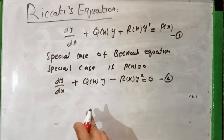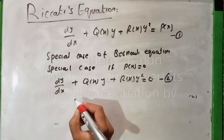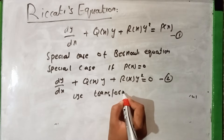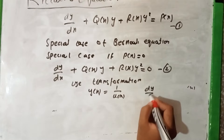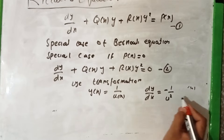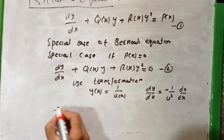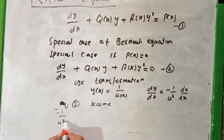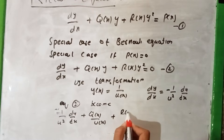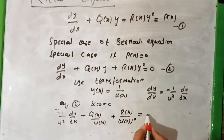We can solve equation 2 by transformation and find its solution. We use the transformation y(x) equal to 1 over u(x), so dy/dx equals minus 1 over u² times du/dx. Substituting into equation 2: minus 1 over u² times du/dx plus q(x) times 1 over u plus r(x) over u² equals 0.